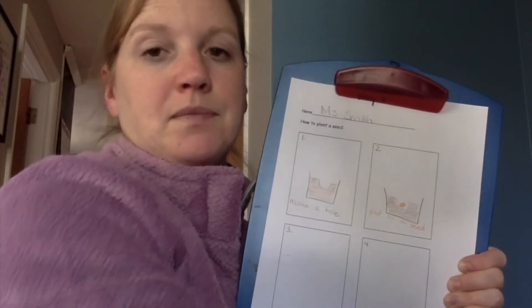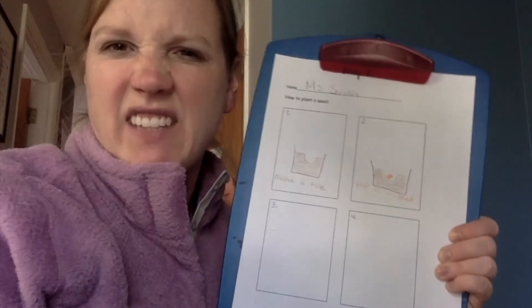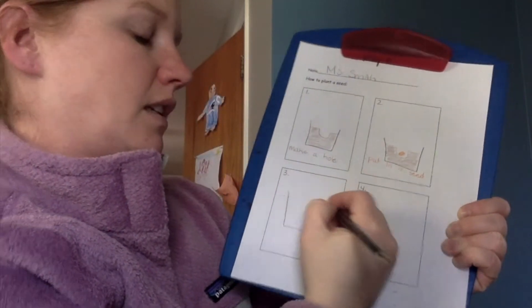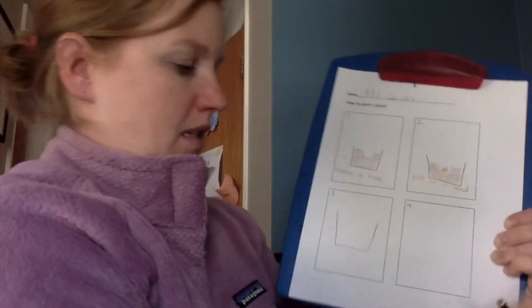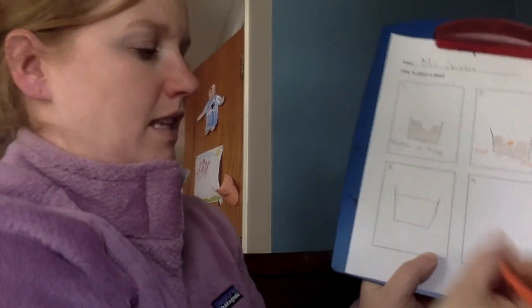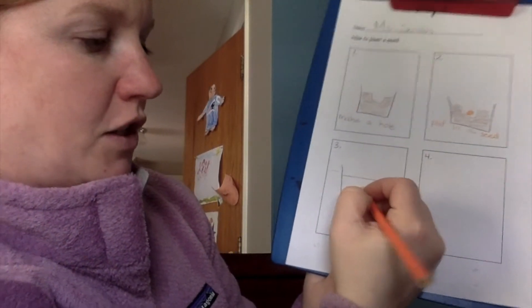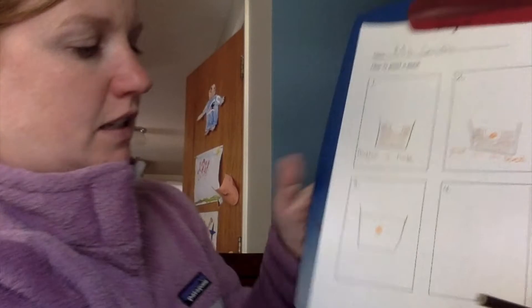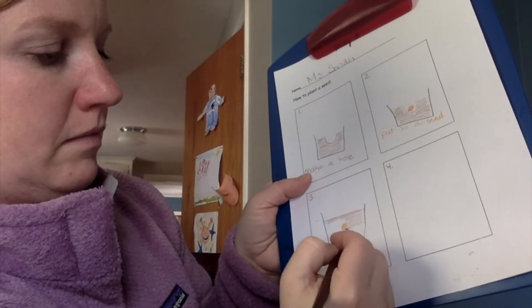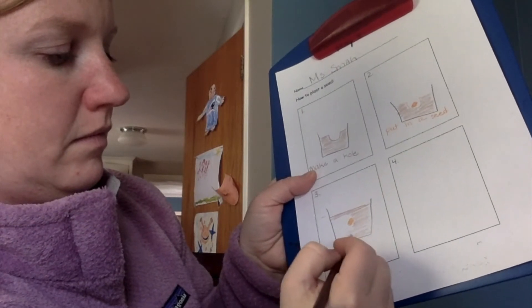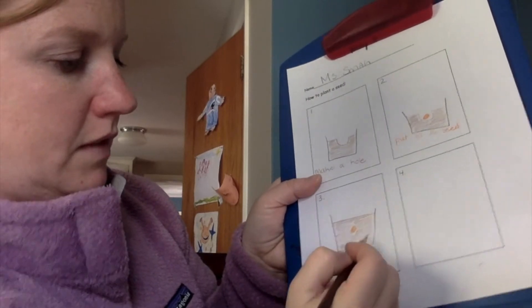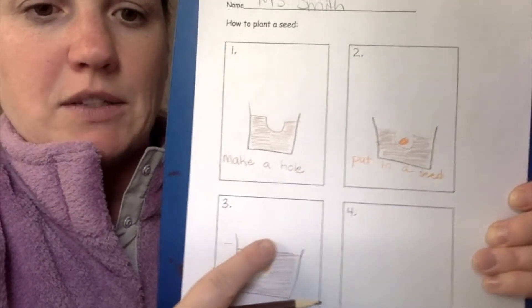Next, what do we do after we put the seed in there? Do we just leave it there? Nope. We covered it back up with dirt, right? So here's my pot again. Here's my dirt. I'm going to draw the seed under the dirt and then I'm going to color around it so that I don't color on top of it. So here's my seed. Now it's under the dirt this time.